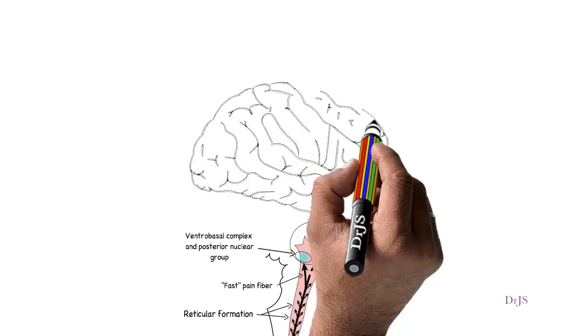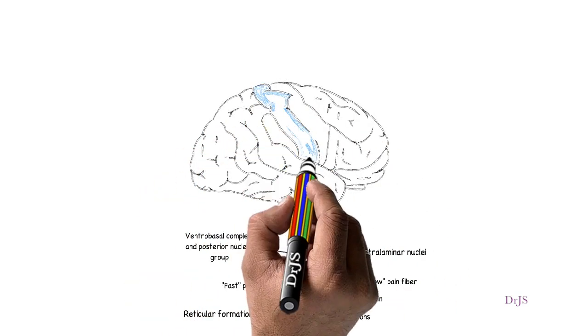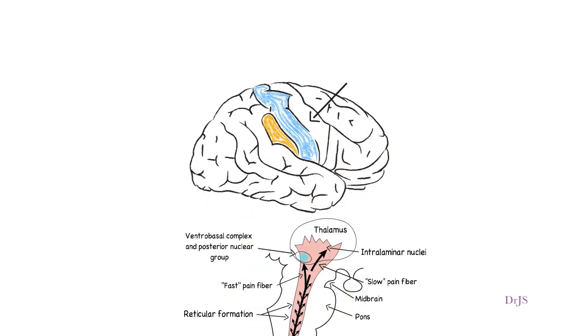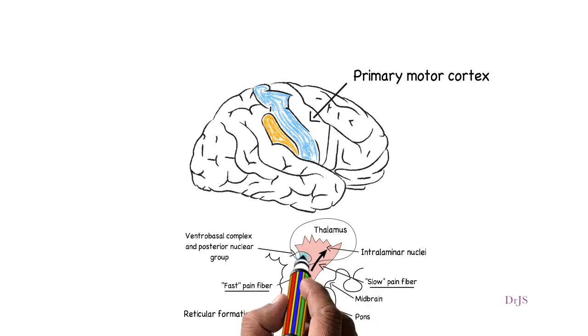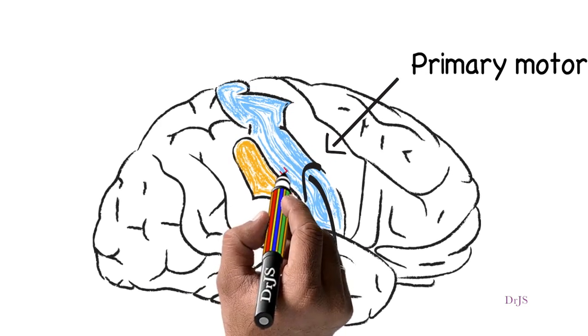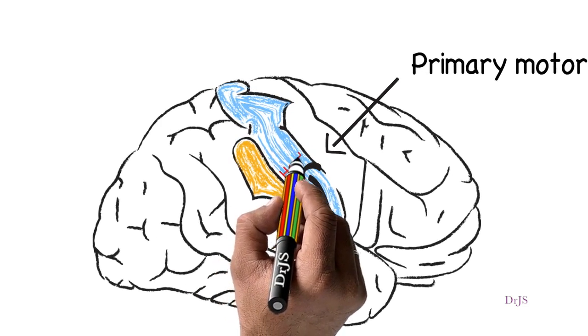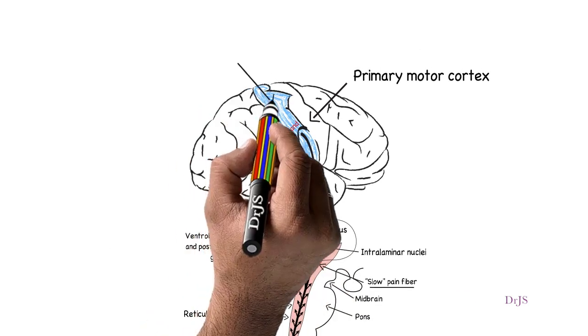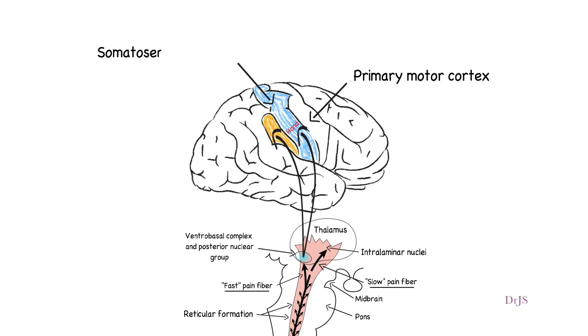From these thalamic areas, the signals are transmitted to other basal areas of the brain and to the somatosensory cortex, like somatosensory area 1 as well as somatosensory area 2.